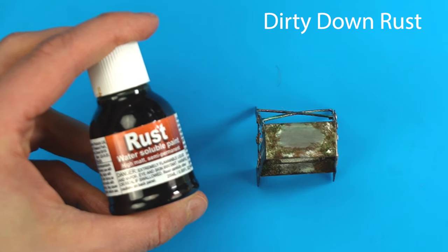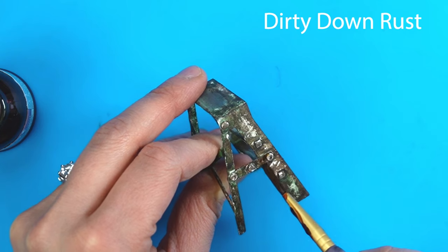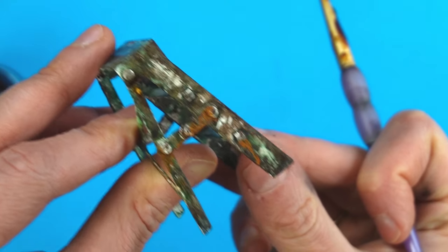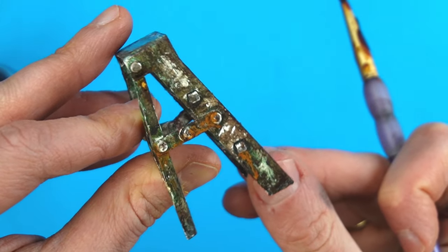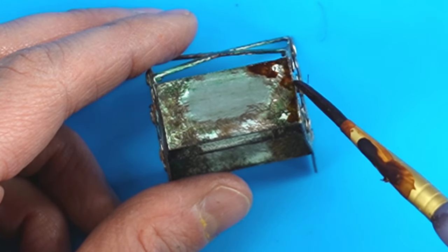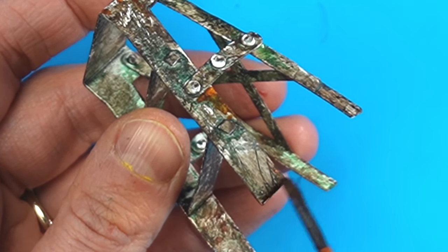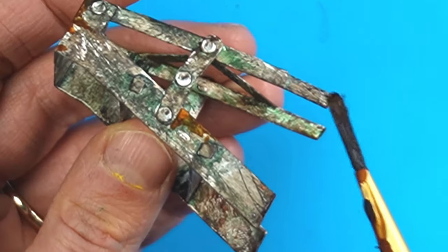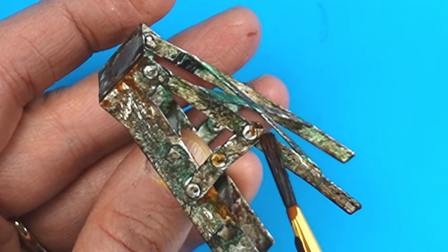This little bottle contains chemicals that creates real rust, so it doesn't get more realistic than this. It costs $20 a bottle, but it's really satisfying to create instant rust. I will make some DIY rust on the cheap later when I finish the wheelbarrow.